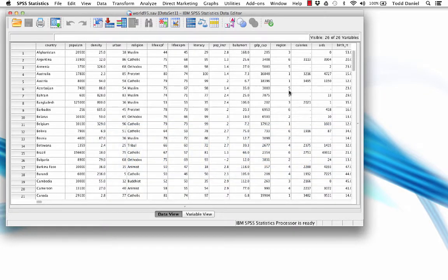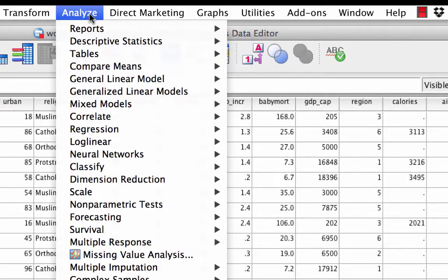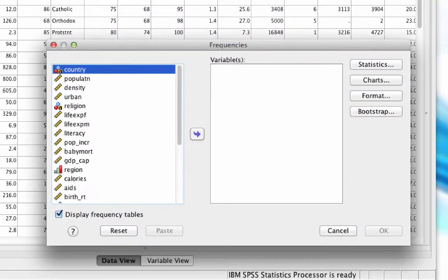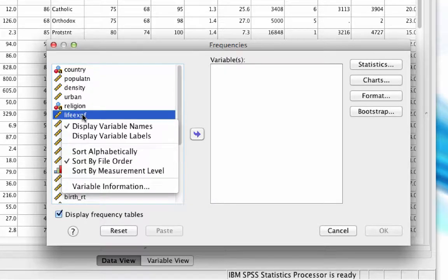To begin our analysis, we will go to Analyze, Descriptive Statistics, Frequencies. We currently see our variables as variable names. To change that, right-click or on a Mac, ctrl-click on any of the variable names and choose display variable labels.